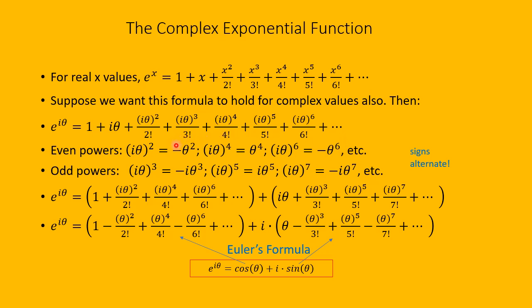Similarly, for odd powers: i theta cubed is i squared times i, which is minus 1 times i, so this quantity is minus i theta cubed. i theta to the 5th power equals i times theta to the 5th. The quantity i theta raised to the 7th power is minus i times theta to the 7th, and so on. These signs also alternate as we go along.